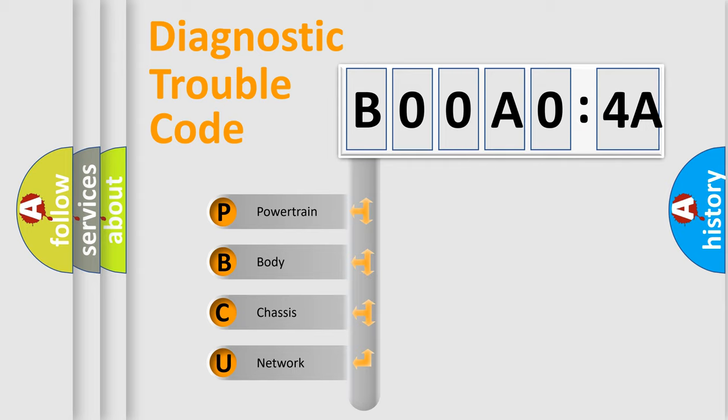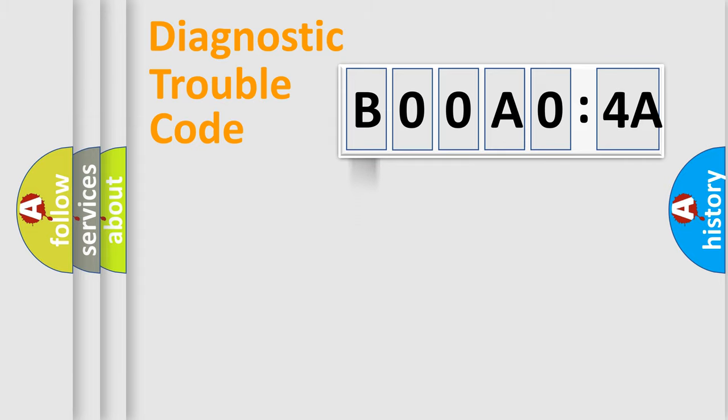We divide the electric system of automobile into four basic units: Powertrain, Body, Chassis, and Network. This distribution is defined in the first character code.